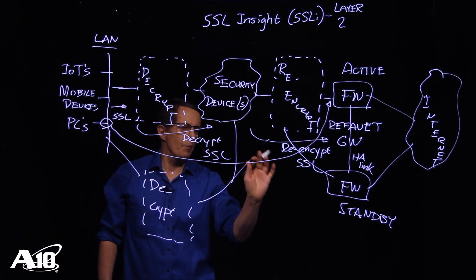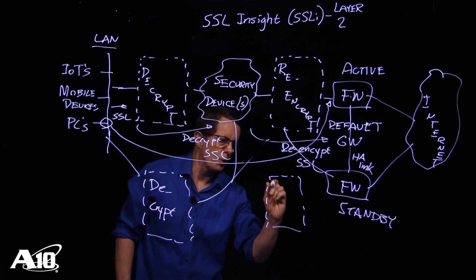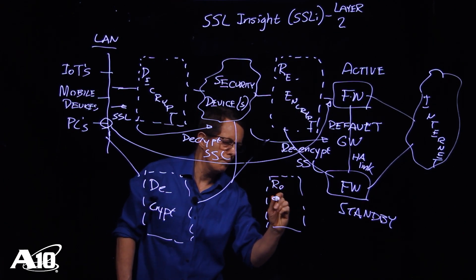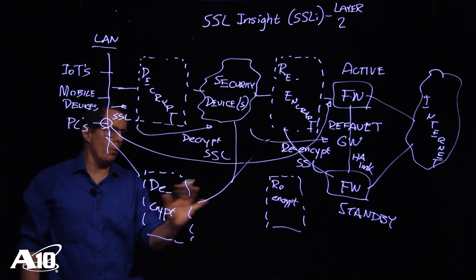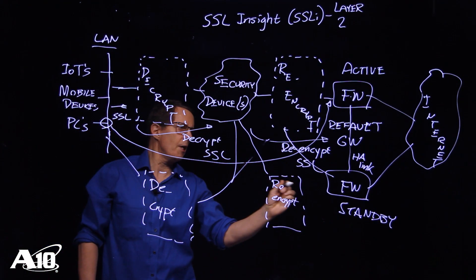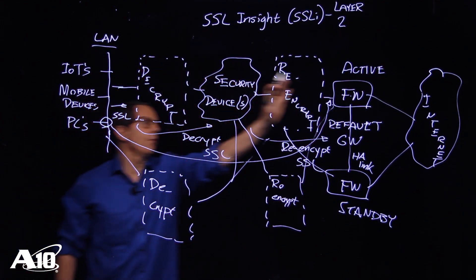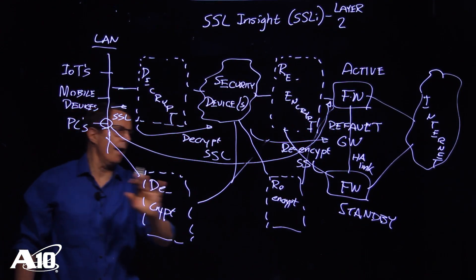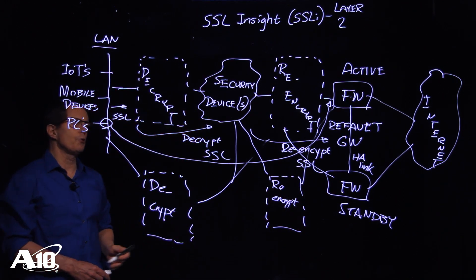And to complete the picture, what I need to draw here is a re-encrypt portion of the same appliance that was used to decrypt. So we're feeding into the security device chain going over here to the firewall. And now we have a path here at the top, a path here at the bottom for high availability in a layer two drop-in.